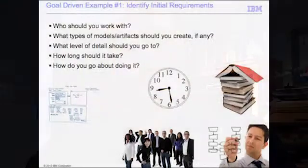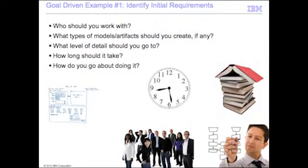One of the issues they have to address is: who should they work with? Should they be working with a stakeholder proxy such as a product owner or a business analyst? Should they be working with end users, senior managers of those end users, regulatory people, enterprise architects, other IT people, or operations and support people? There's a wide range of stakeholders and a range of potential people representing those stakeholders that they may have to work with, and different teams will find themselves in different situations with different classifications of stakeholders.